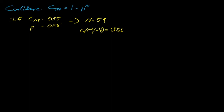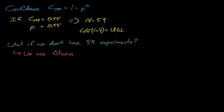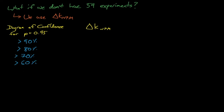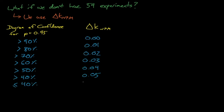If we don't have 59 experiments, then we can use this table to determine what additional margin, in the form of delta k npm, we should subtract from our minimum c over e prediction. If we have so few points as to have less than a 40% confidence, then we need to find more data points before we can use this nonparametric method.